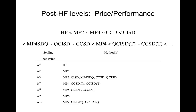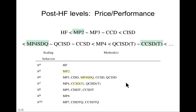I'll just remind you of a prior slide that had a price-performance comparison. In order of quality, MP2 was sort of your cheapest best option, and coupled cluster singles doubles with perturbative triples — usually just pronounced CCSD(T) because people actually use the full triples even though it's parentheses — that's the gold standard option if you can afford it.